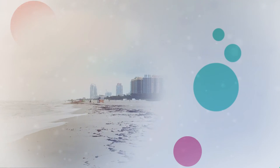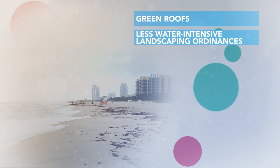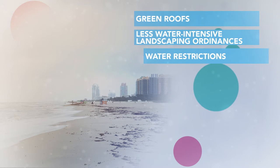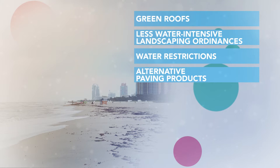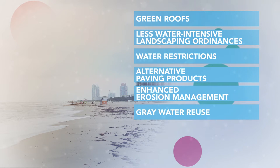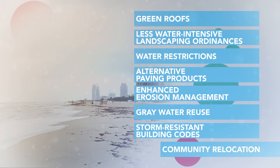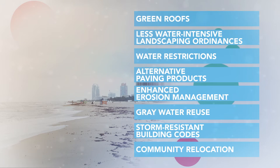Best management practices include green roofs, less water-intensive landscaping ordinances, water restrictions, alternative paving products, enhanced erosion management, gray water reuse, and storm-resistant building codes. In extreme cases, adaptation may mean community relocation.